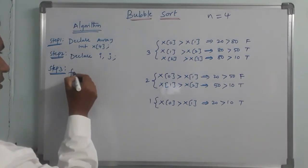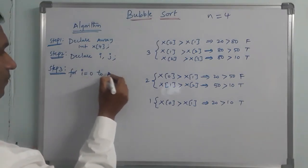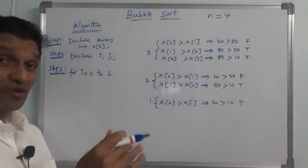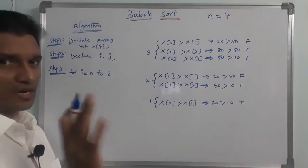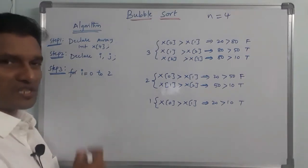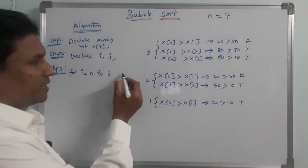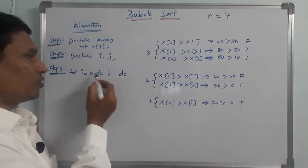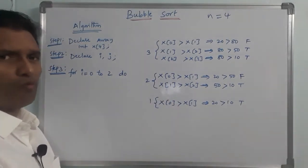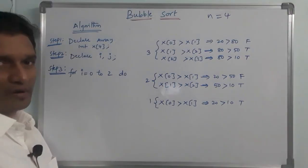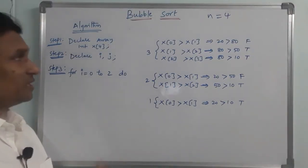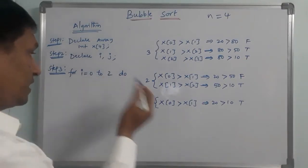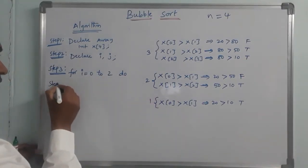Step 2: Declare two loop variables i and j. i is the outer loop variable and j is the inner loop variable. i starts at 0, goes through 1 and 2 — representing the first, second, and third passes.